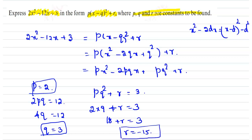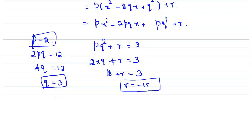We have p = 2, q = 3, and r = -15. The expression 2x² - 12x + 3 can be written as 2(x - 3)² - 15.